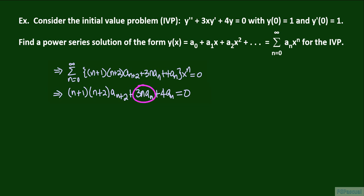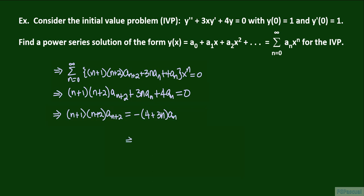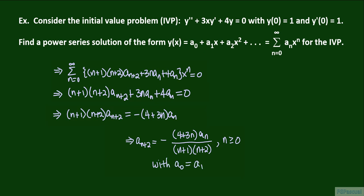Bringing the terms 3n a sub n plus 4 a sub n to the other side, we have on the left the quantity n plus 1 times the quantity n plus 2 times a sub n plus 2, and on the right, factoring out a sub n, we get minus the quantity 4 plus 3n times a sub n. Solving for a sub n plus 2, we get a sub n plus 2 equals minus the quantity 4 plus 3n times a sub n, divided by the product of n plus 1 and n plus 2. This holds for n greater than or equal to 0, with initial values a sub 0 equals 1 and a sub 1 equals 1.